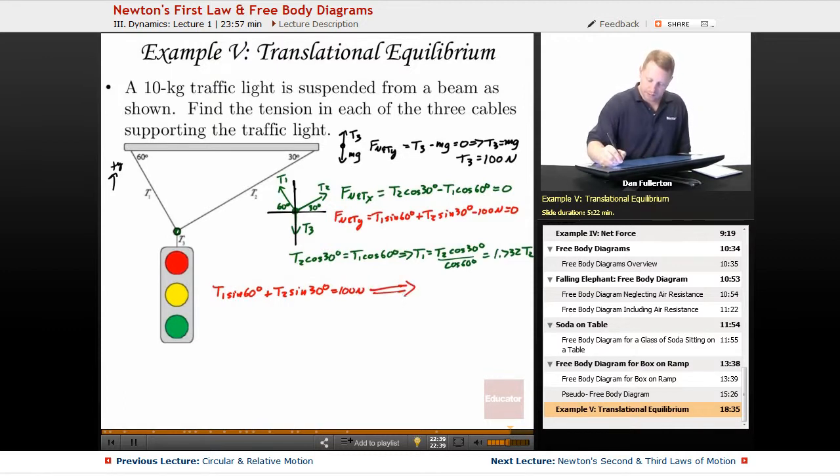Which implies then, since we know that T1 equals 1.732 T2, we can replace T1 with that. So we have 1.732 T2 sin 60 degrees plus T2 sin 30 degrees is going to be equal to our 100 newtons.